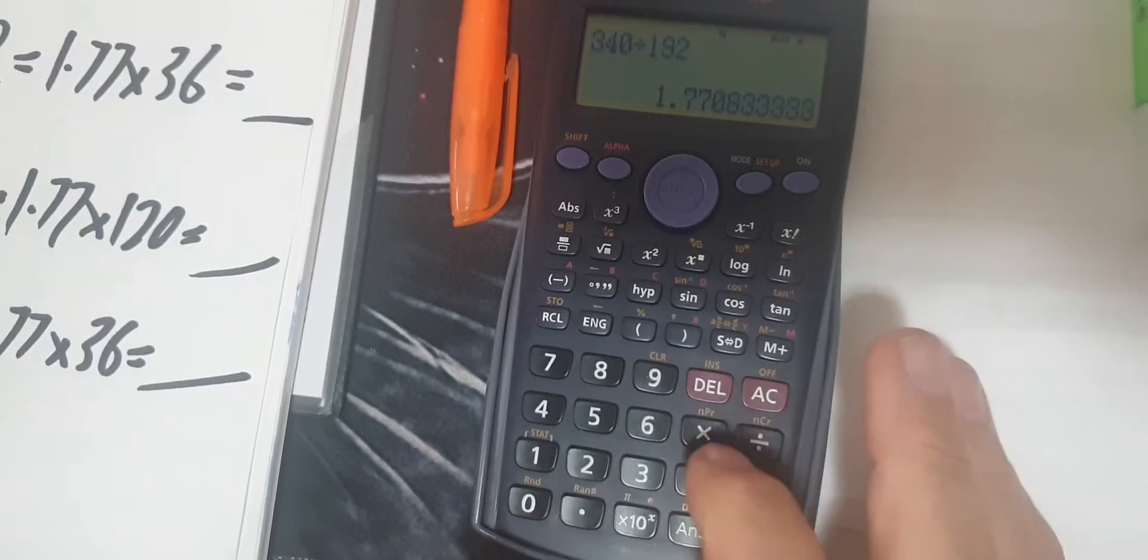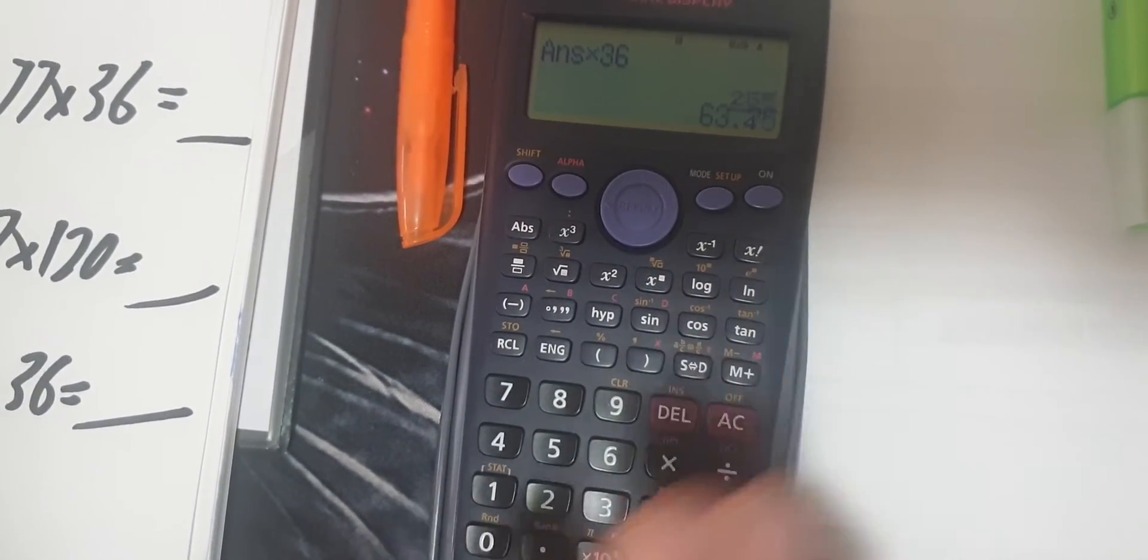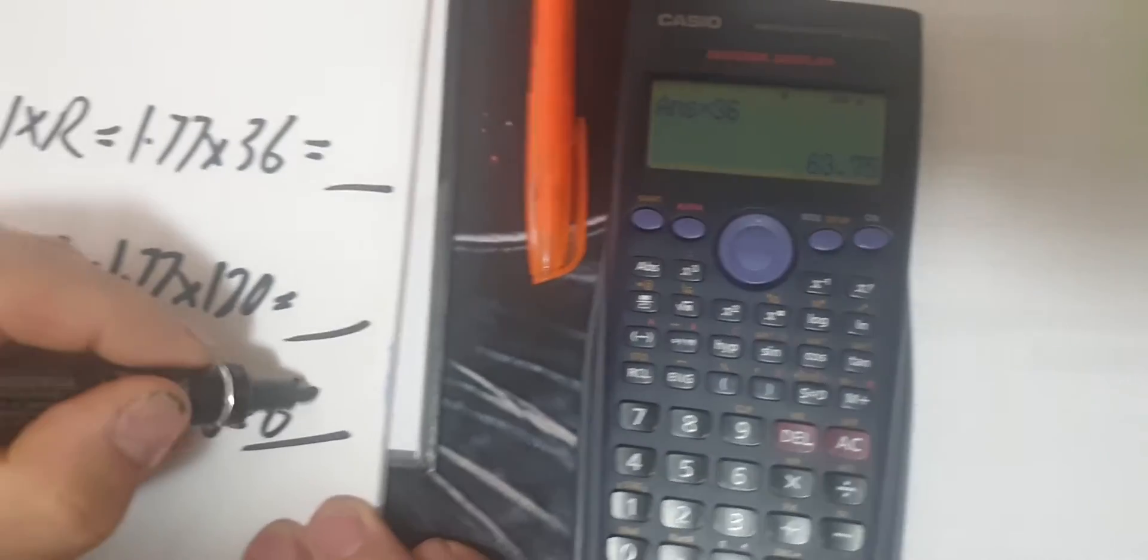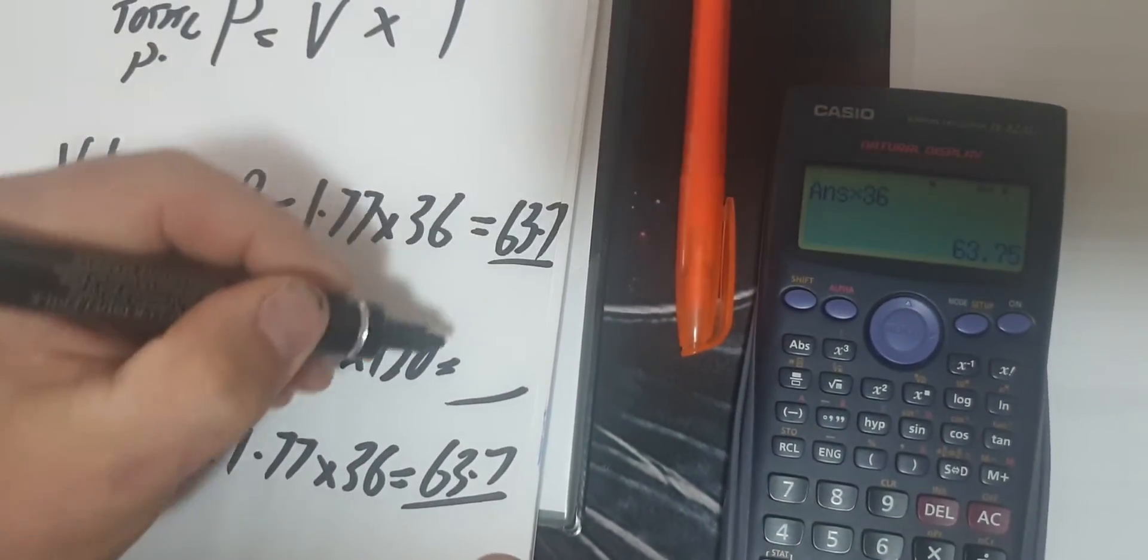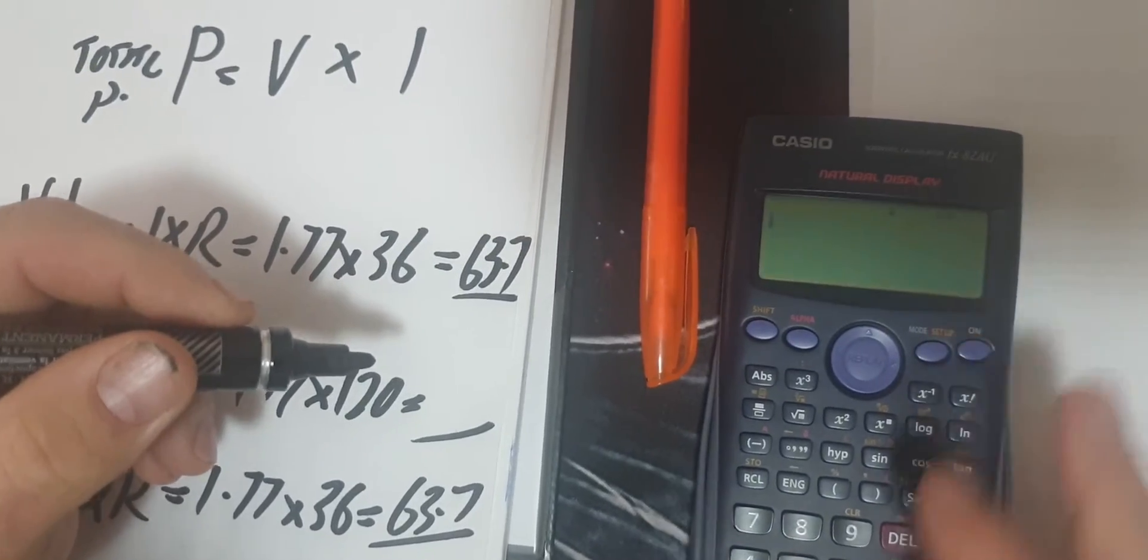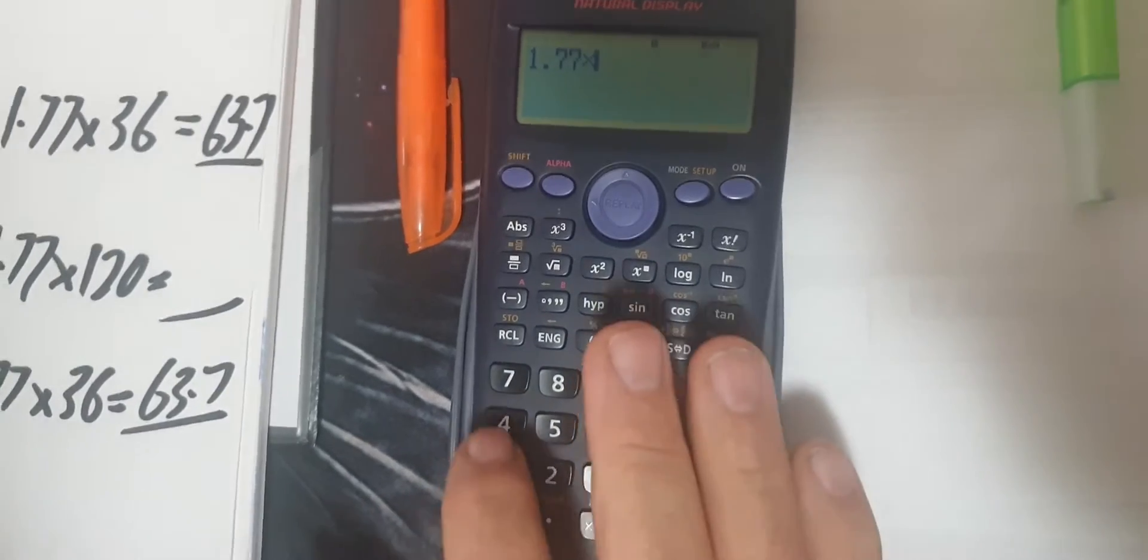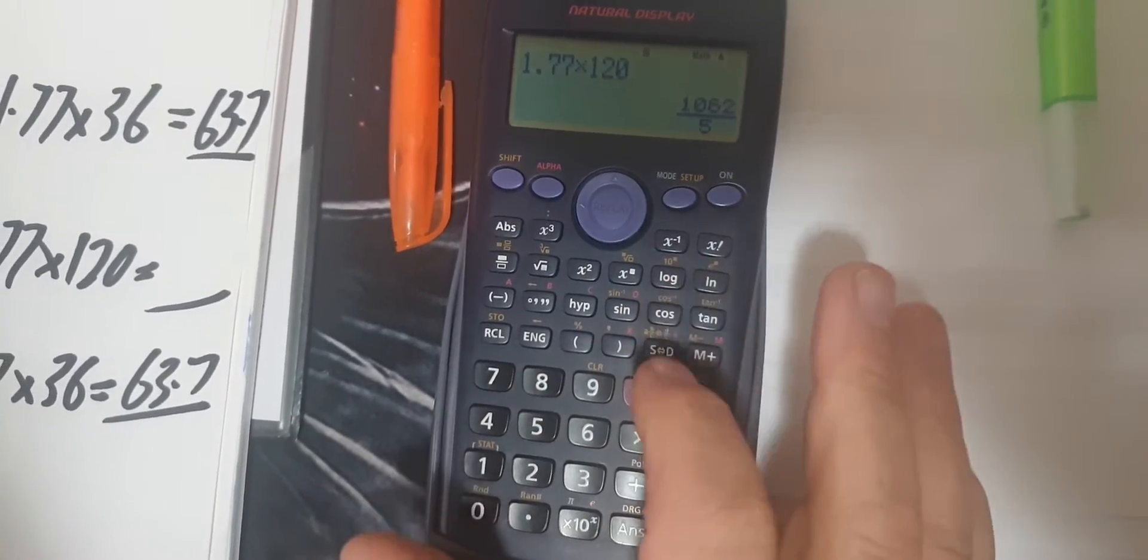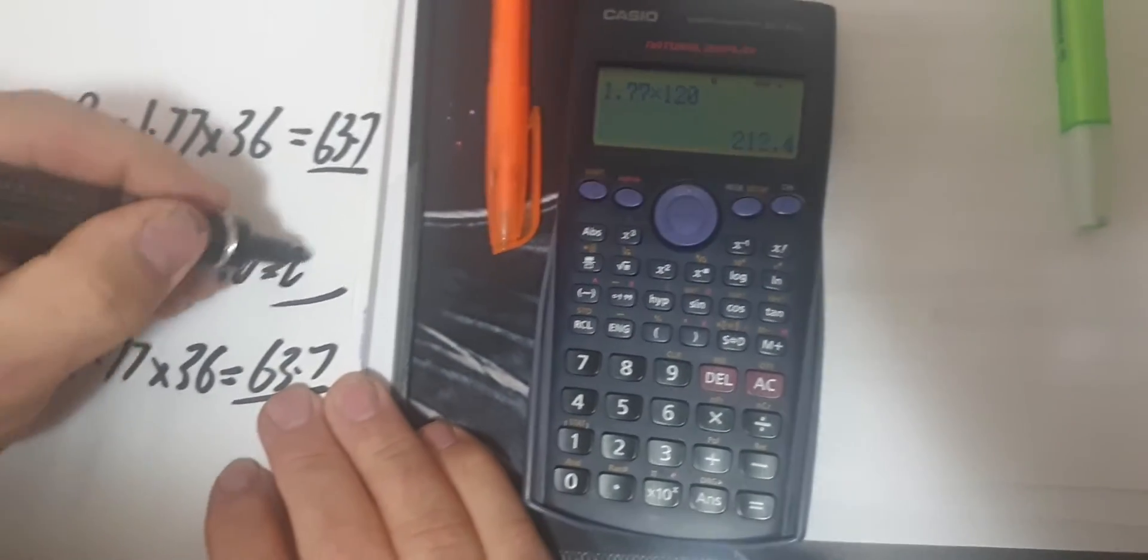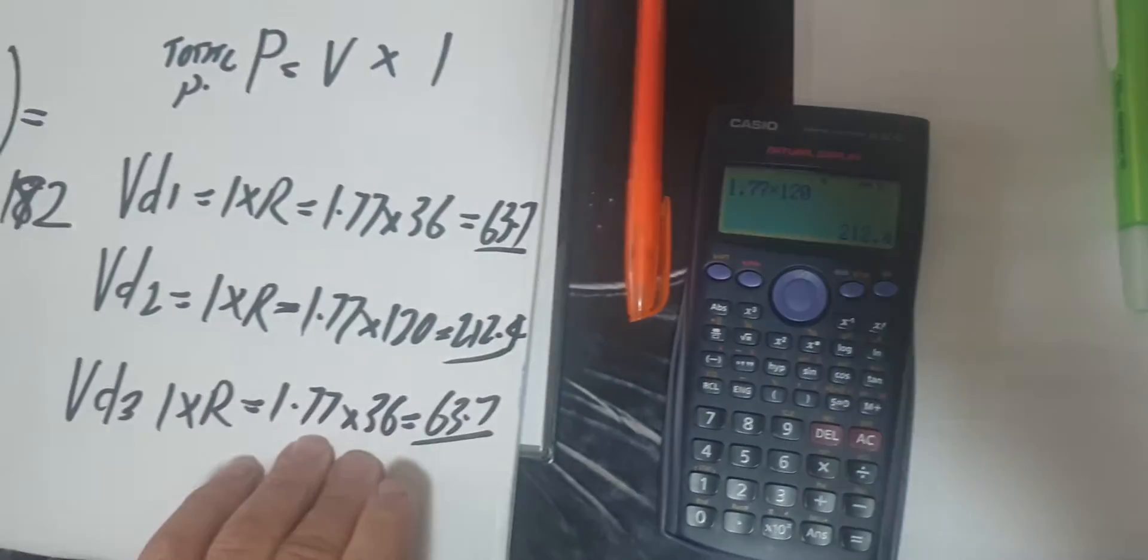So 1.77 times 36 equals 63.7 volts. Then it will be the same here. And the next one we've got is 1.77 times 120 equals 212.4 volts. So now I've got the three voltage drops.